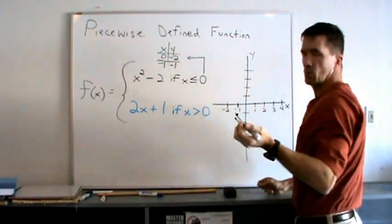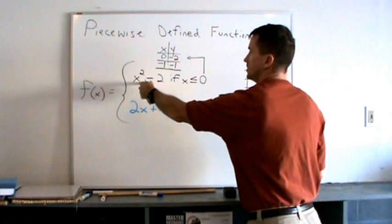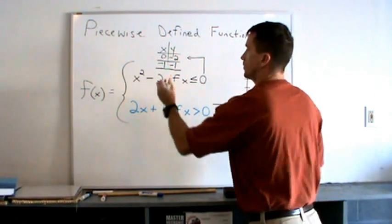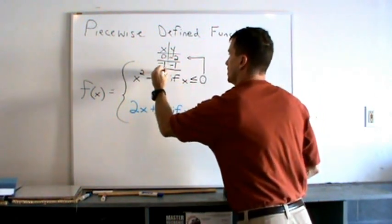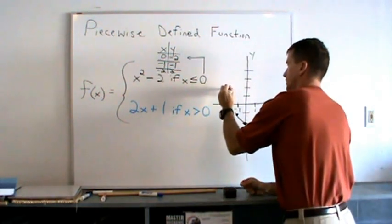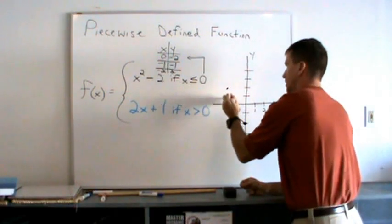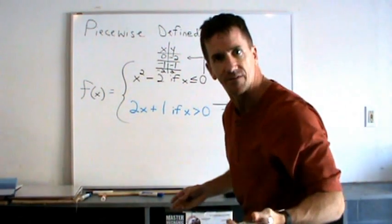If you wanted one more point you can do it. Let's see what's going on at negative 2. If we plug in negative 2 here, negative 2 squared is 4, minus 2 is 2. And we're done with half the graph.